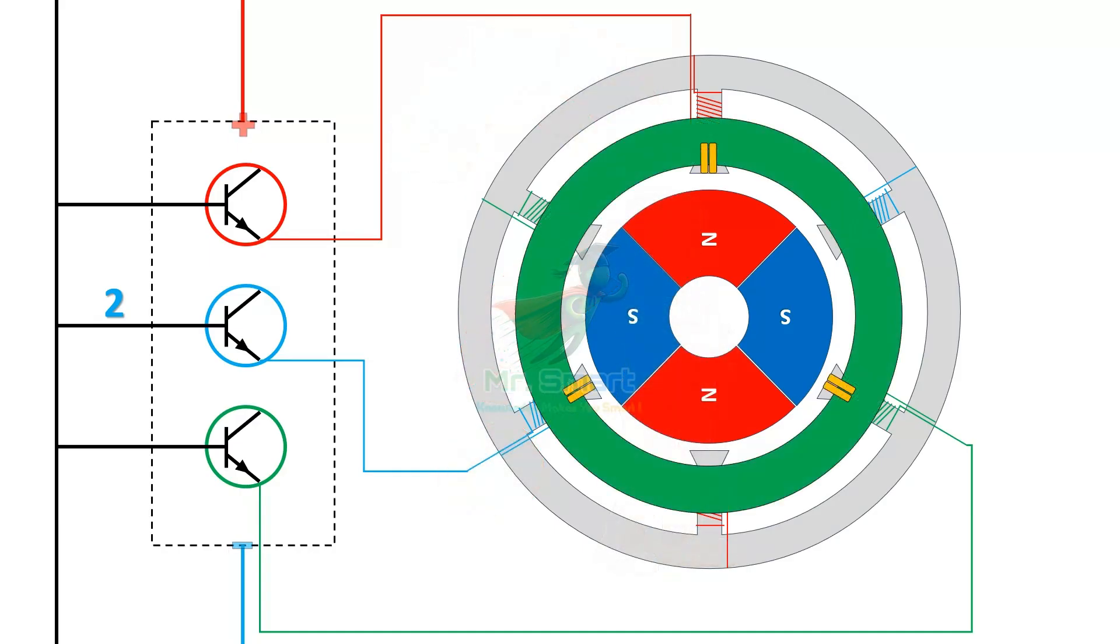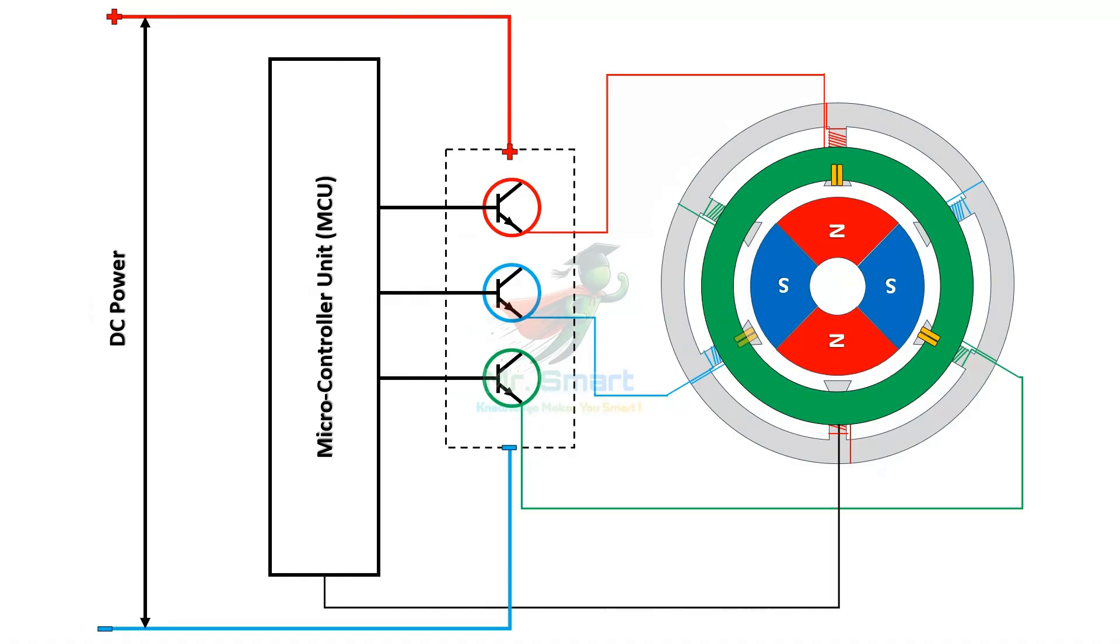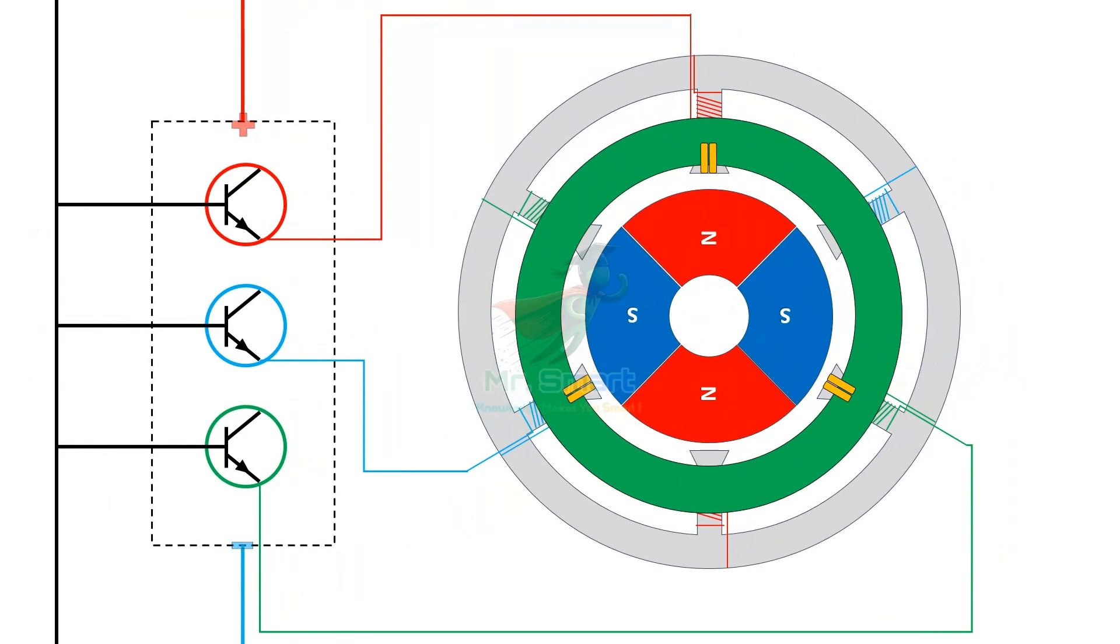Hall sensors in the electronic circuit of the motor detect the rotor's position and send signals to the microcontroller. The microcontroller unit, or MCU, processes the data and activates the correct stator coils in sequence.